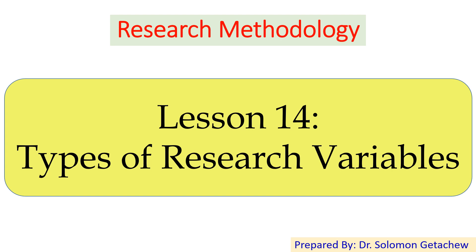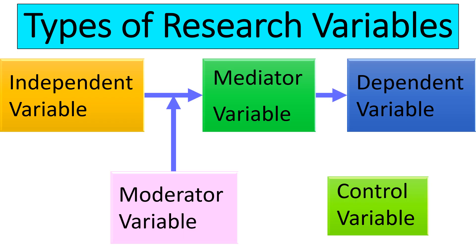Hello everybody and welcome back to lesson 14: Types of Research Variables. Based on their roles and relationship with one another, types of research variables can be divided into five: independent variable, dependent variable, mediator, moderator, and control variables.